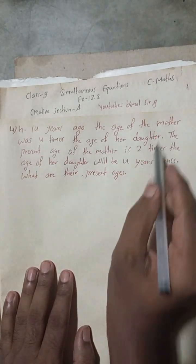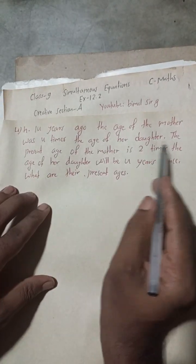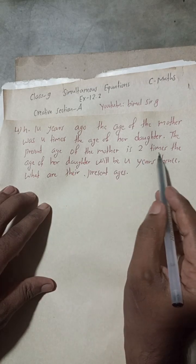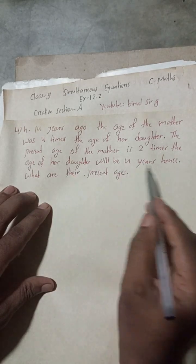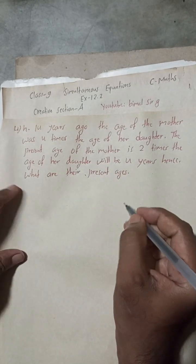Fourteen years ago, the age of the mother was four times the age of her daughter. The present age of the mother is two times the age her daughter will be four years hence. What are their present ages?